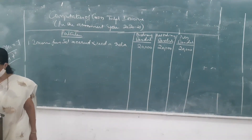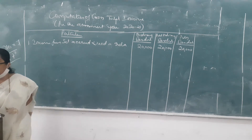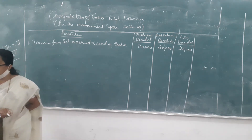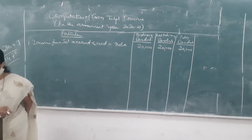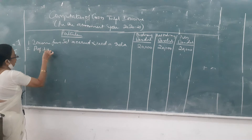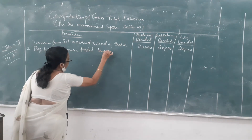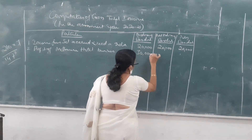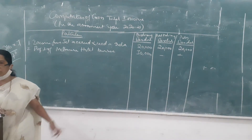Second: profit of a hotel business at Melbourne — 30,000. This is a foreign income, earned and received outside India. So it is applicable only to the ordinary resident, because it is neither received nor earned in India.